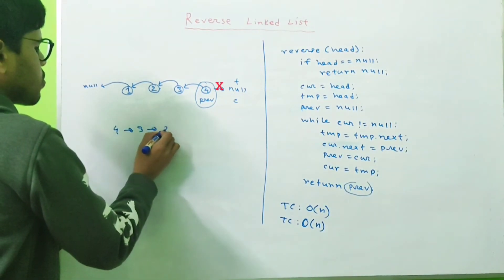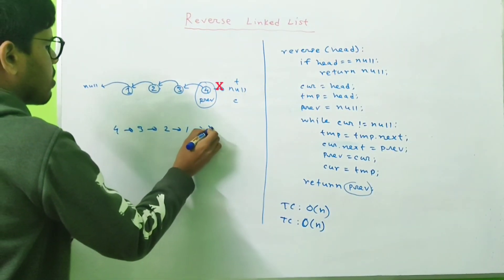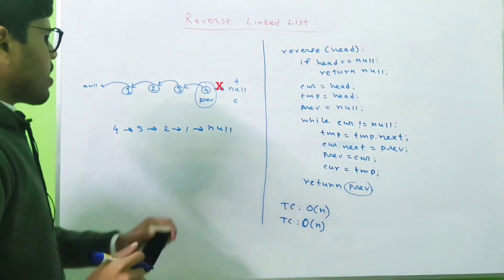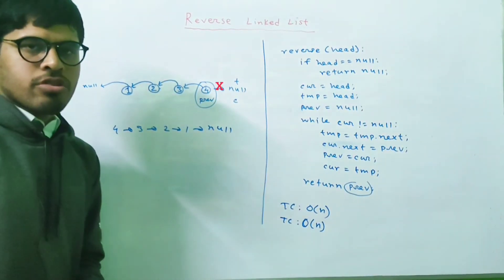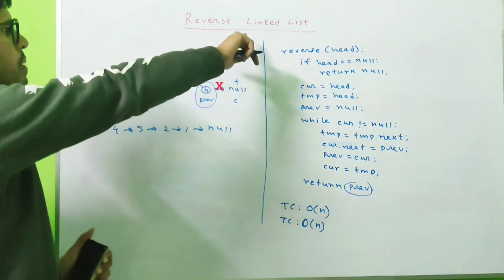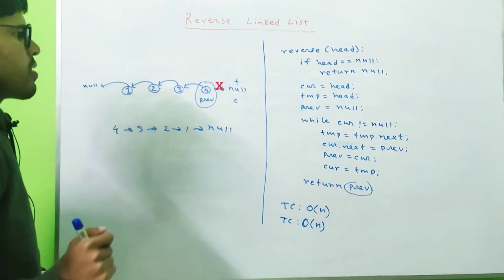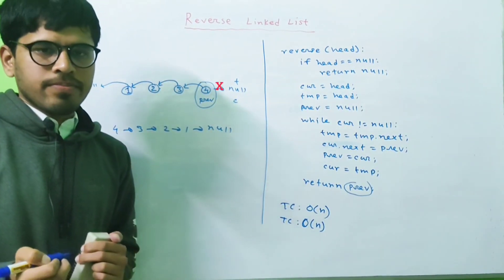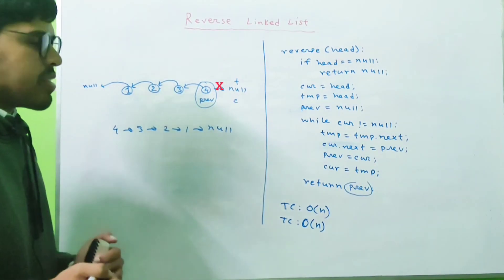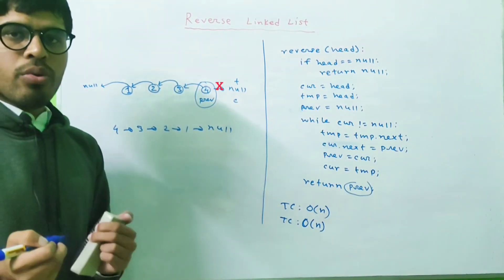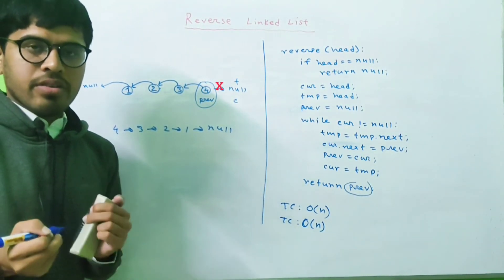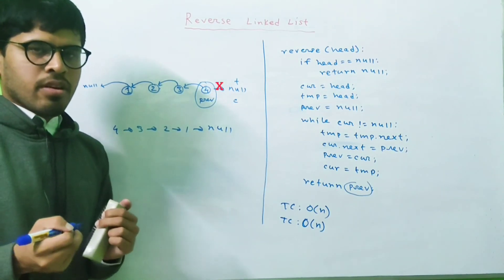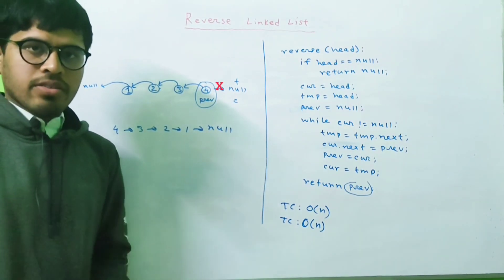We now have the reversed linked list: 4 3 2 1. This is the iterative solution to the reverse linked list problem. In the next video we'll see how to solve this problem recursively — the recursive solution is a bit tricky. See you in the next video.